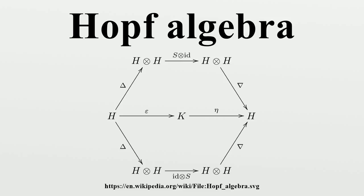The antipode is an analogue to the inversion map on a group that sends g to g⁻¹.